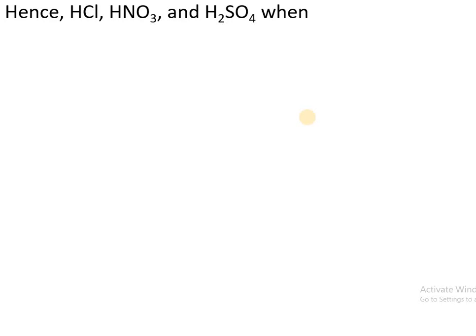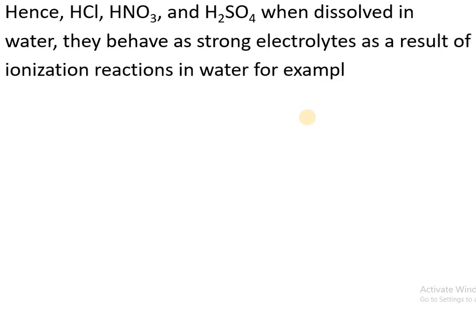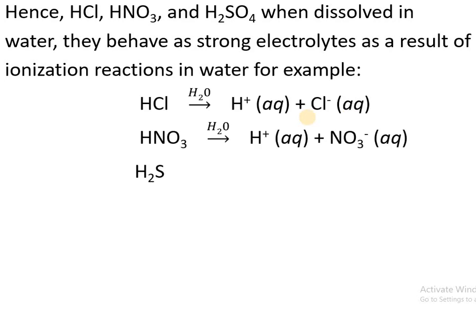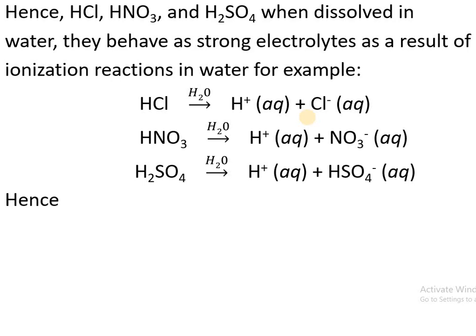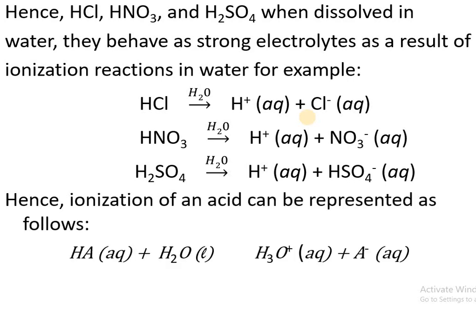HCl, HNO₃, and H₂SO₄, when dissolved in water, behave as strong electrolytes as a result of ionization reactions in water. These chemical equations represent their dissociation into ions. The ionization of an acid can be represented by these equations.